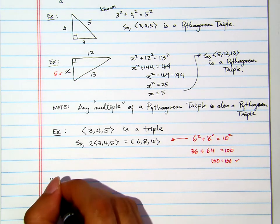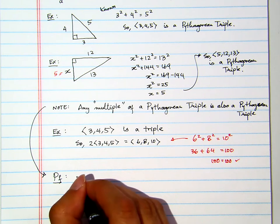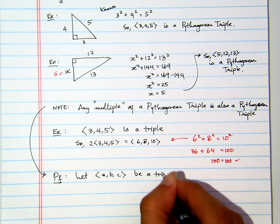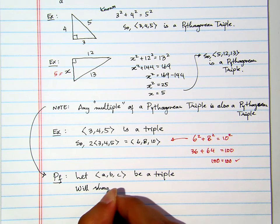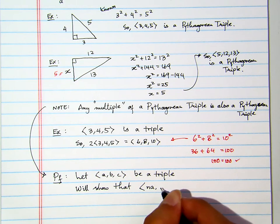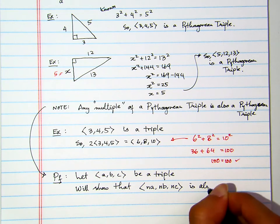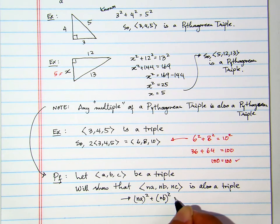Now, I can give you a proof here. A proof of that statement. Let a, b, c be a triple. We will show that n times a, n times b, n times c, if you multiply each one of them by n, is also a triple. And when I say multiple here, it doesn't have to be an integral multiple. It doesn't have to be twice of that, three times of that. It could be 0.5 of that or 0.3 of that. Now, if it is a triple, then it must satisfy this: (na) quantity squared plus (nb) quantity squared. And I want to show that, at the end, this leads into (nc) quantity squared.